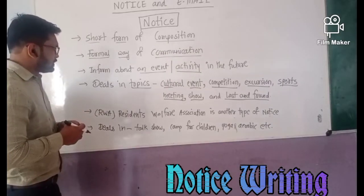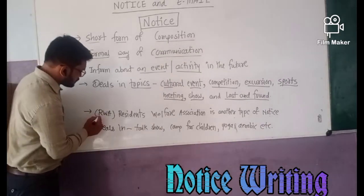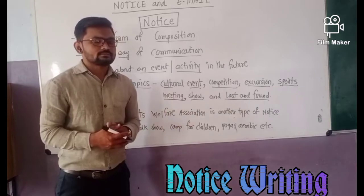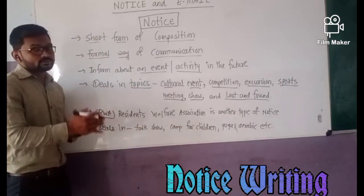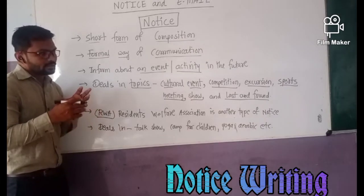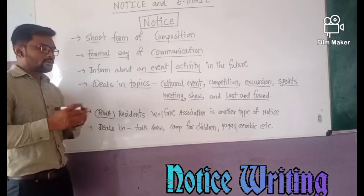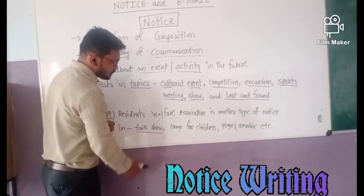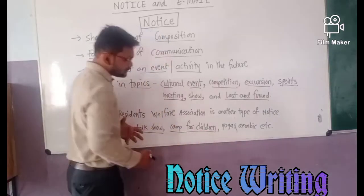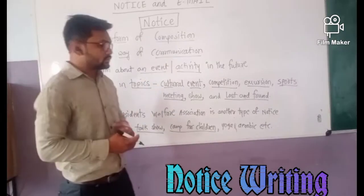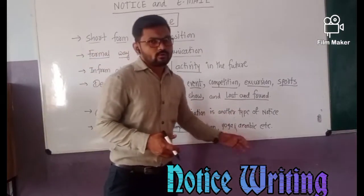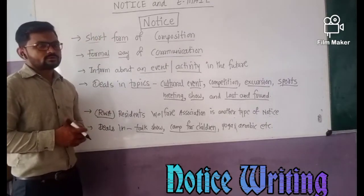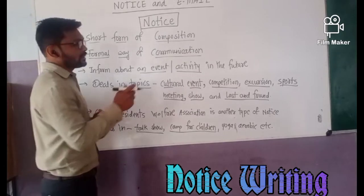Some types of notices can also be written by other means — for example, by Residents' Welfare Associations, which are generally formed in colonies and societies to conduct events for a particular group. Common topics for these include talk shows, camps for children, and yoga and aerobics camps. This completes the brief description about notice writing.